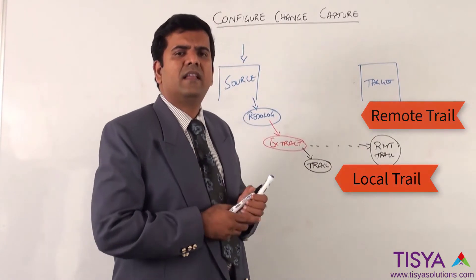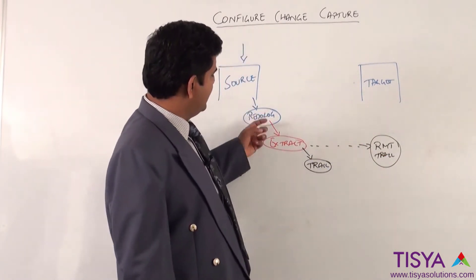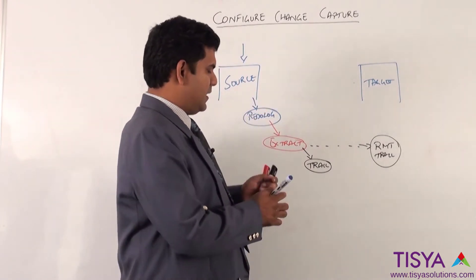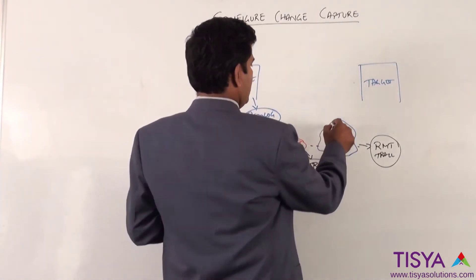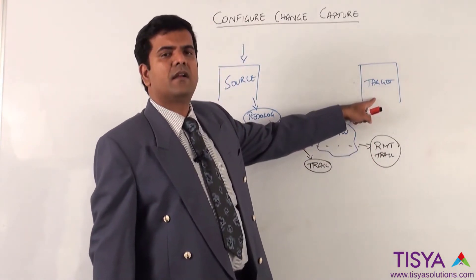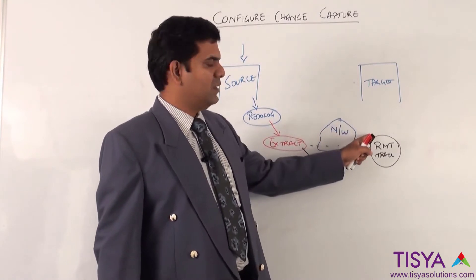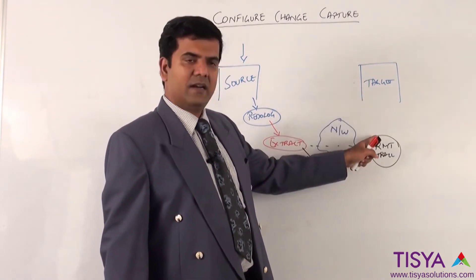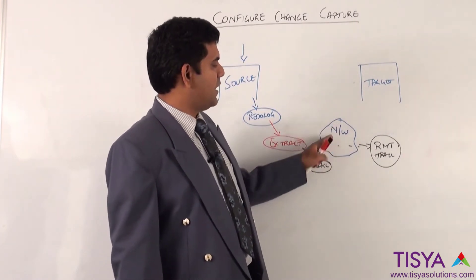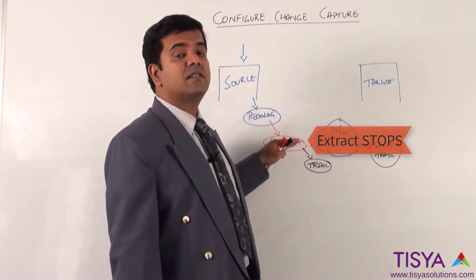When extract is reading from the redo log and writing to a remote trail, it has to send the data over the network to the remote host where GoldenGate should already be running on the target. Through the network it will start a collector process on the target side and receive the data there. In case anything happens on the network or on the target side, the extract itself will stop.